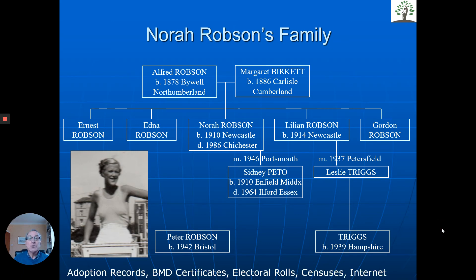The records we looked at here included adoption records, birth, marriage and death records, and census records. The electoral rolls were very useful in pinpointing exactly where people lived.